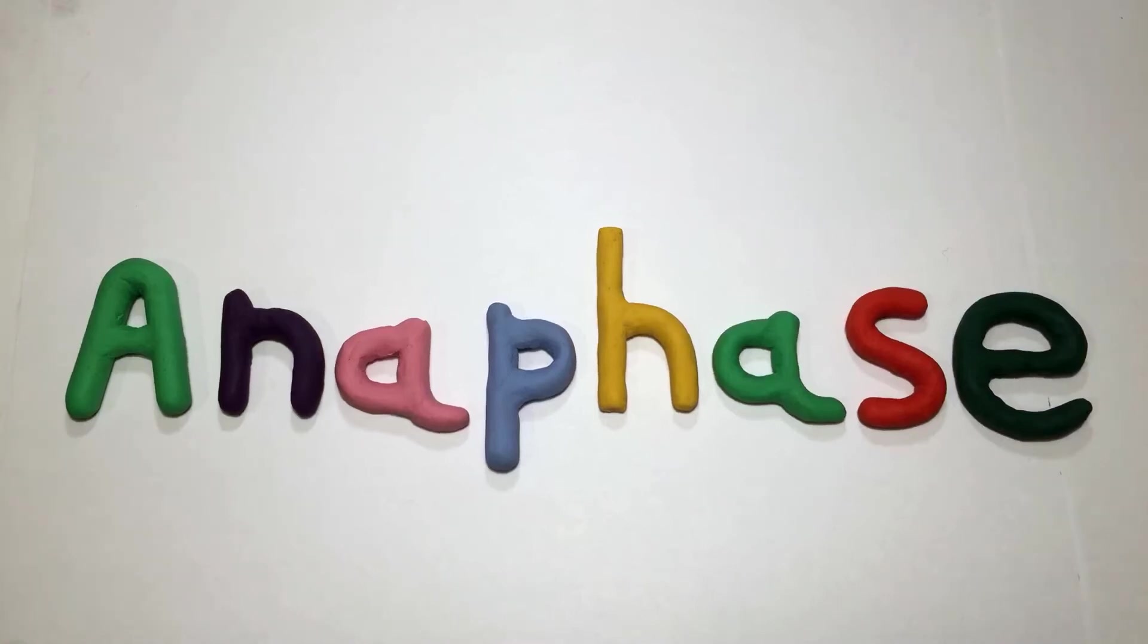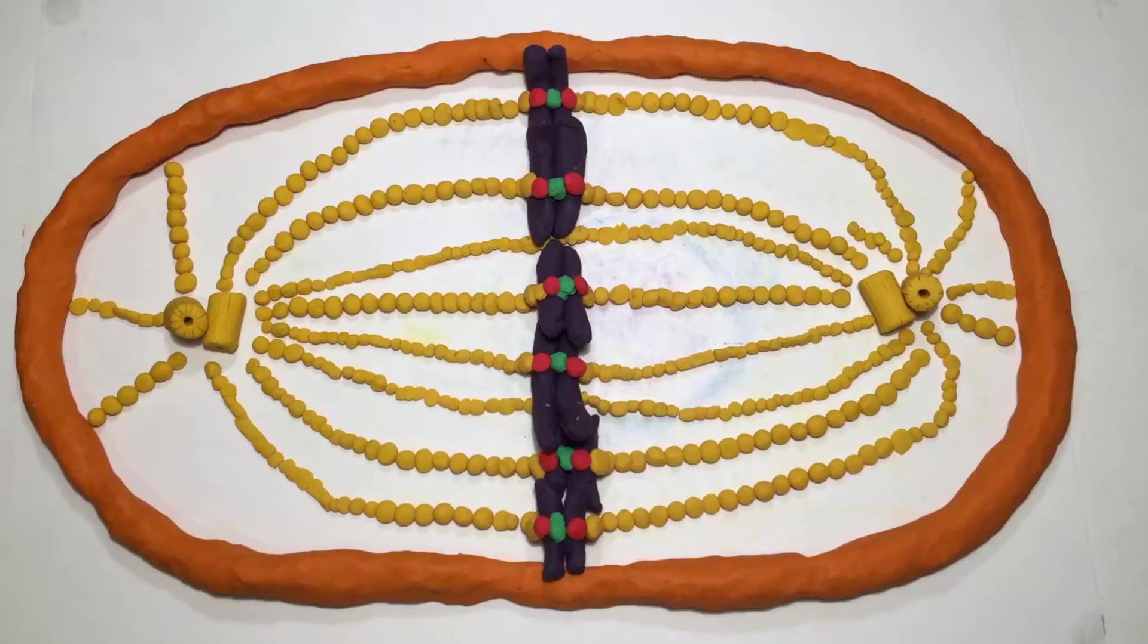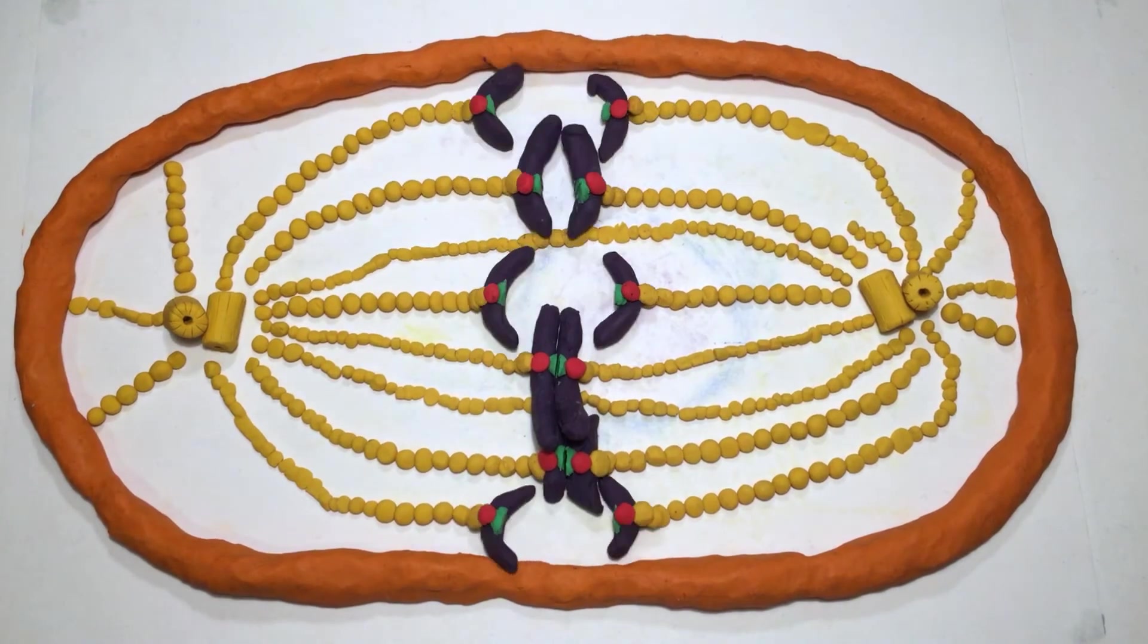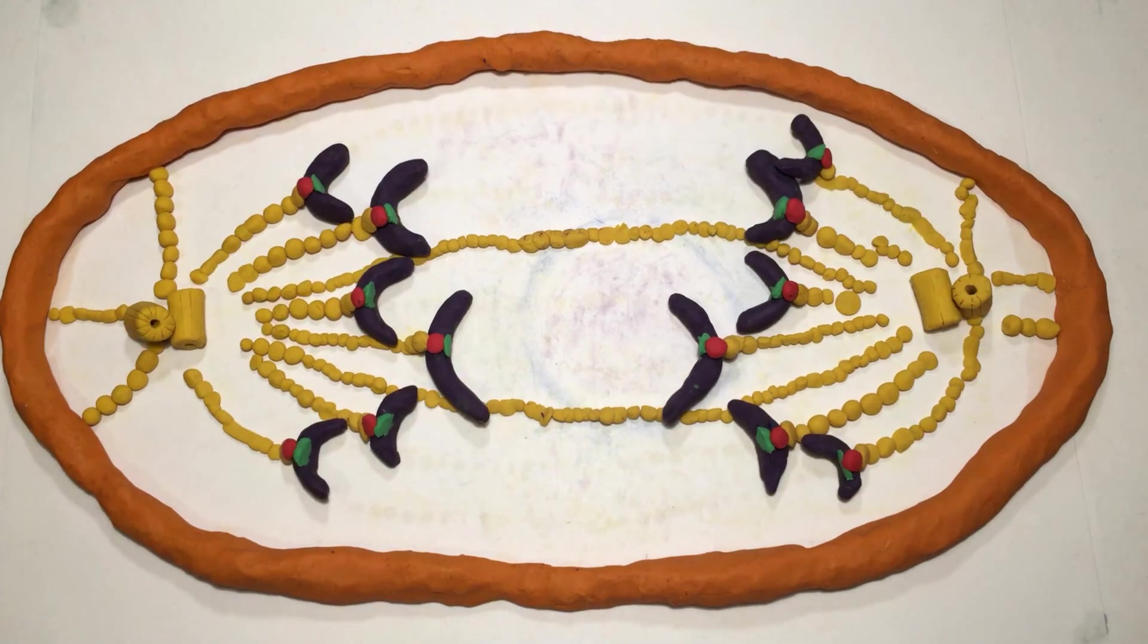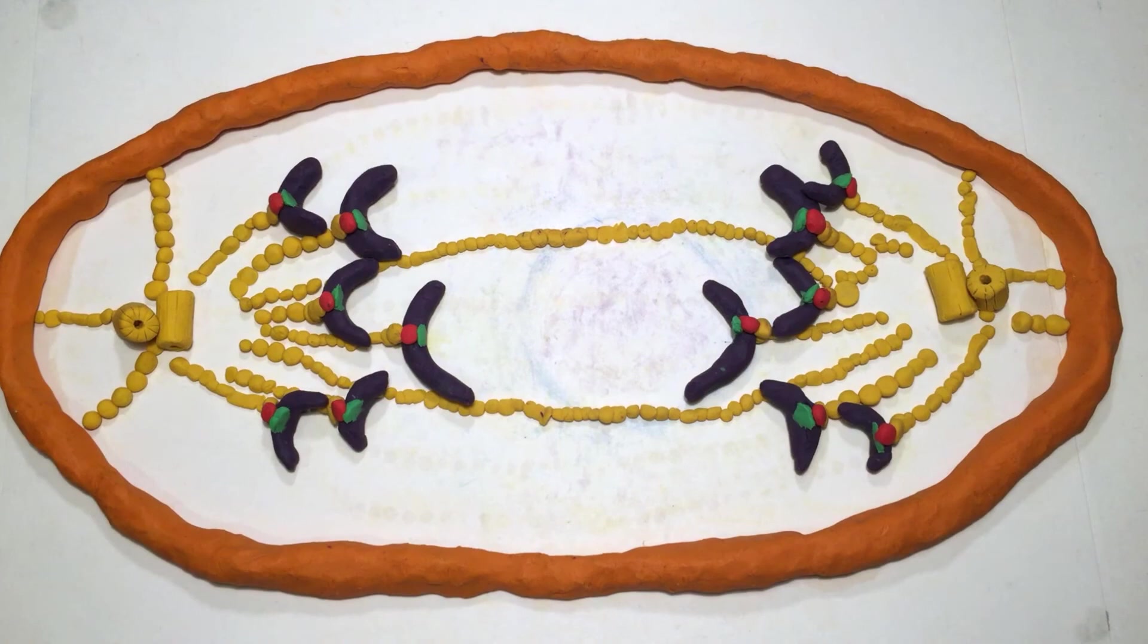Anaphase follows next. The prefix ana, which means back, should help you remember this one because it's when the sister chromatids separate and are drawn back to opposite sides of the cell by the microtubules. During this time, the microtubules that aren't attached to chromatids push against the cell membrane, which further stretches out the cell.